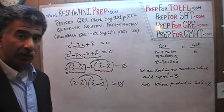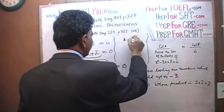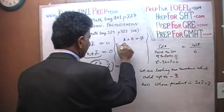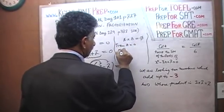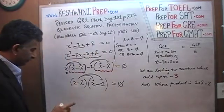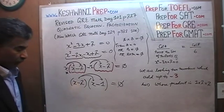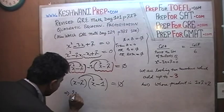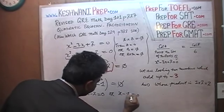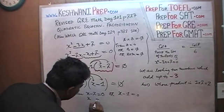When the product of two quantities equals 0, either one or both must equal 0. So either x − 2 = 0, giving x = 2, or x − 1 = 0, giving x = 1. Those are the two roots: positive 2 and positive 1.